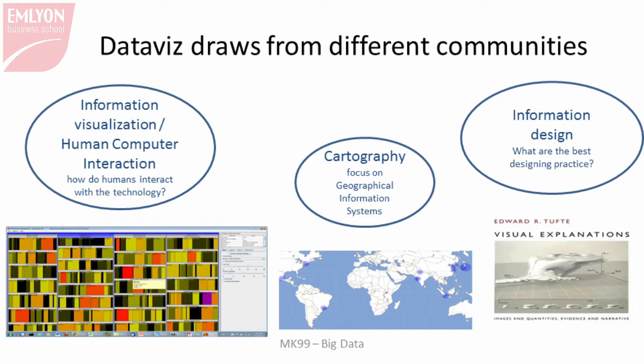Cartography and geographical information systems are closely related to data visualization, since many datasets lend themselves to being visualized on a map. Edward Tufte is another precursor — he wrote the first influential books about how to design and present information to make it easier to understand without introducing bias for the viewer. He was essentially working before the web, which is why I call him a precursor rather than an active practitioner.